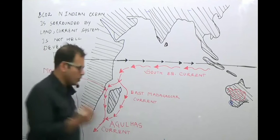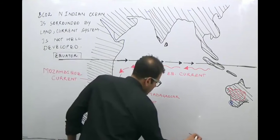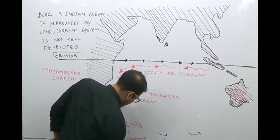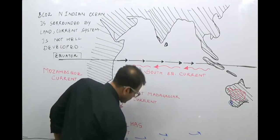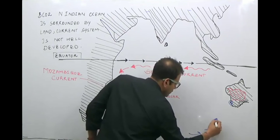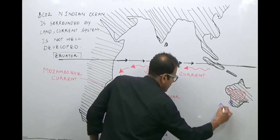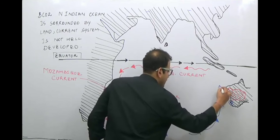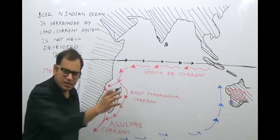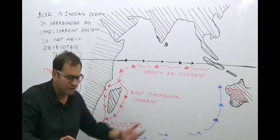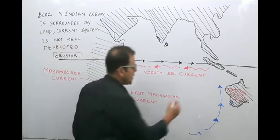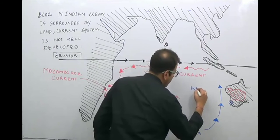What is the cold current? The cold current comes in the form of the West Wind Drift, which flows and under the Coriolis force is deflected to the left-hand side. It is deflected to the left because of the Coriolis force, and it arrives as the West Australian Current.